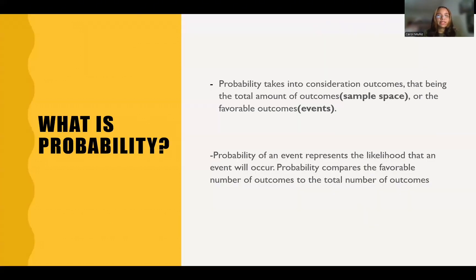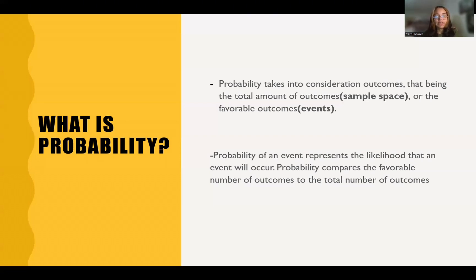Let's start by defining what exactly probability is. Probability takes into consideration outcomes — that being the total amount of outcomes, the sample space, or the favorable outcomes, which is called the event. Probability of an event represents the likelihood that an event will occur. Probability compares the favorable number of outcomes to the total number of outcomes.